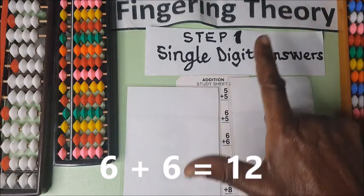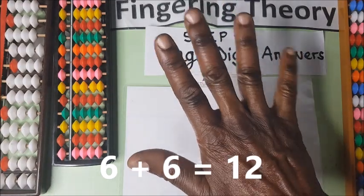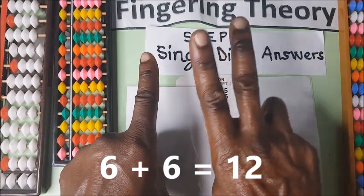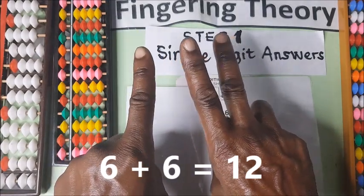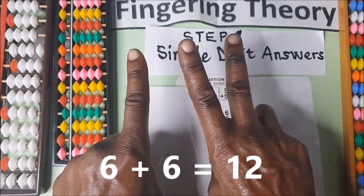Six plus six. This is six. Plus six. One, two, three, four, five, six. So the pointing finger on your left is ten and then you have two. So ten plus two is twelve.